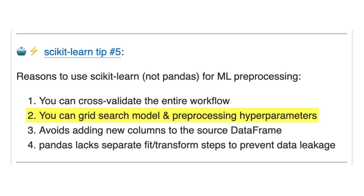Point number two: you can grid search model and preprocessing hyperparameters. Grid search is normally used for searching model hyperparameters, like the C value of logistic regression, but you can also use it to search preprocessing hyperparameters — for instance, the imputation method. You create a pipeline and then do a grid search of that pipeline. With pandas, you simply can't build a pipeline, so this functionality is not available.